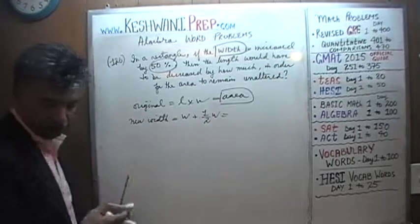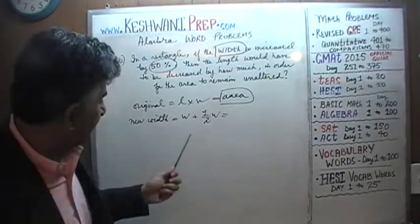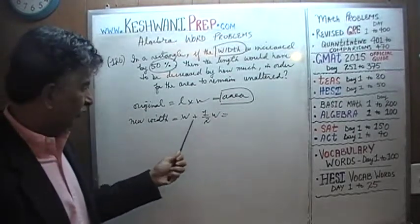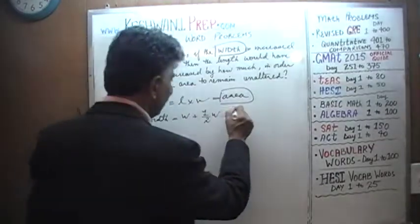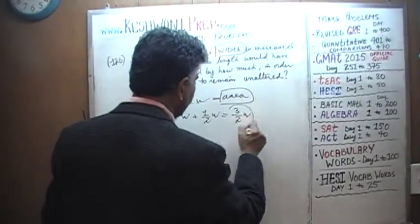Half plus the original amount, which is two halves, because the whole is two halves, two halves and one half is three halves. So it's three halves W. This is our new width.